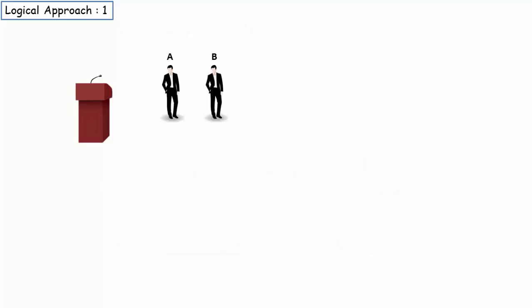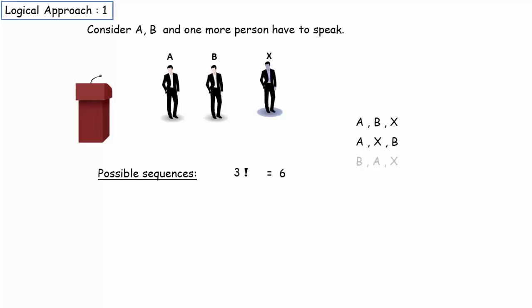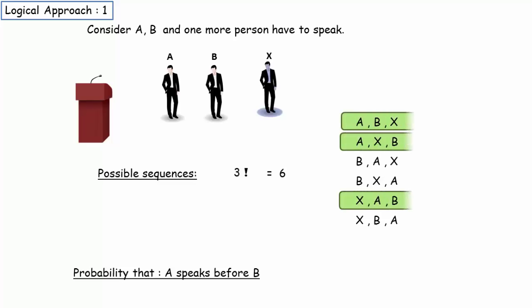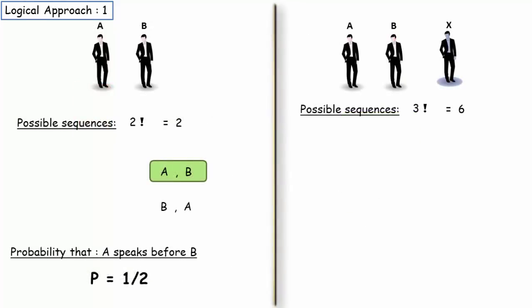Now, consider A, B and one more person X have to speak. The possible sequences are 3 factorial. That's 6. So, here are the 6 possible sequences. Now, the probability that A speaks before B is equal to 1 by 2.